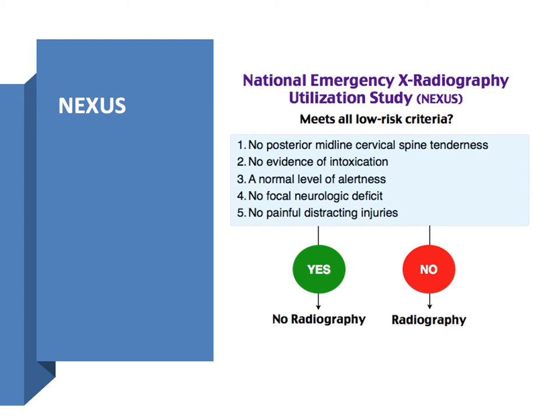There have been studies comparing NEXUS with the Canadian C-spine rule. A study by Hoffman et al. published in the New England Journal of Medicine in 2000 found that the Canadian C-spine rule had higher sensitivity and specificity, and was therefore deemed a better tool to use.